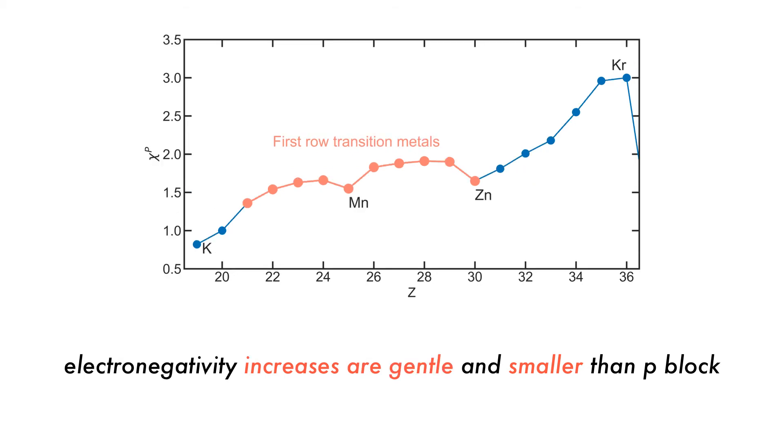Electronegativities gently increase for the first series and generally lie between those of calcium and gallium. There is a gentle increase across the row, but this increase is remarkably small, especially compared to the p-block. This is caused by the increased penetration effect, or stronger effect of nuclear charge.